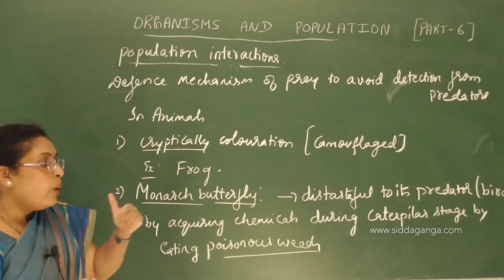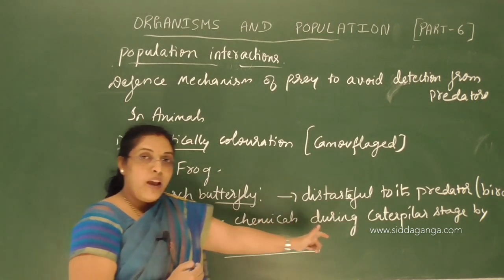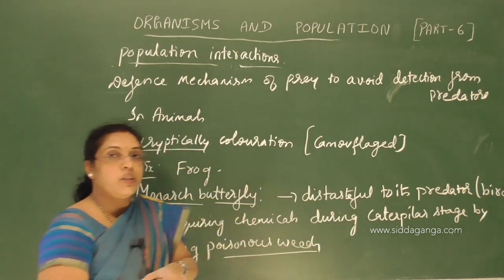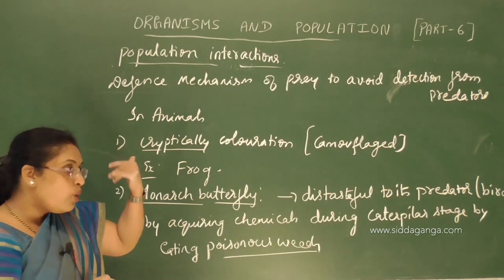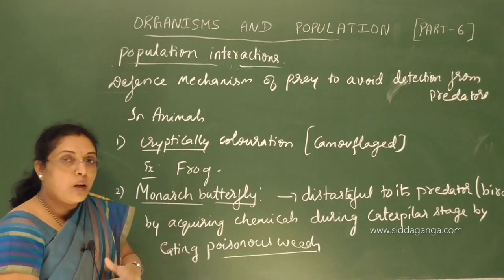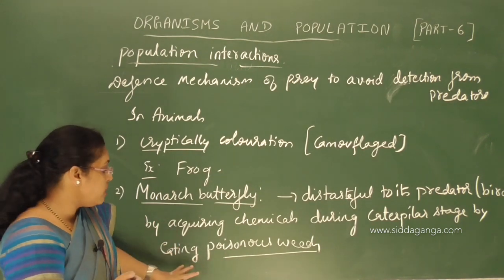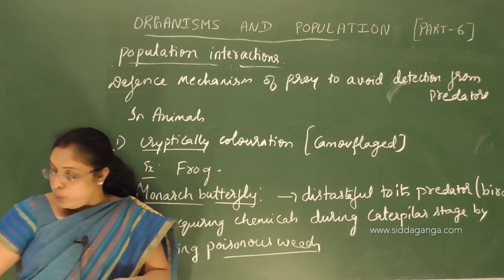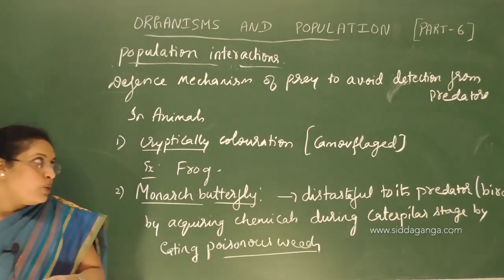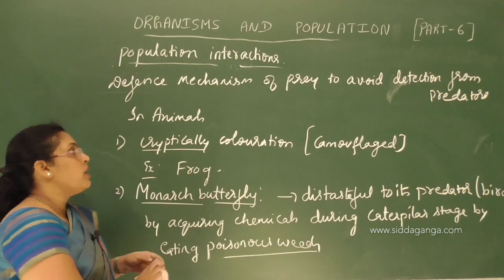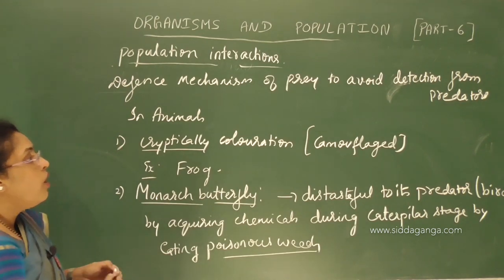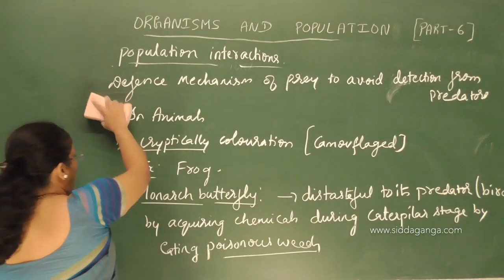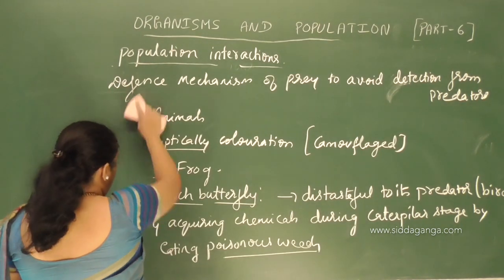During its life cycle, when it is in the caterpillar stage, it starts eating poisonous weeds. This chemical substance gives a bad taste to its predators so that they will not eat the butterfly. These two — cryptic coloration and acquiring poisonous chemical substances — are examples of defense mechanisms in animals.